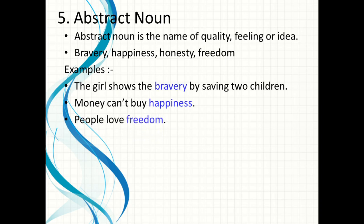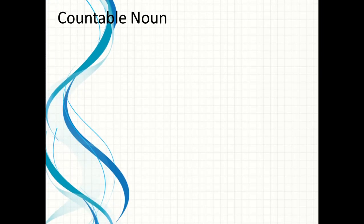'People love freedom' — freedom is also an abstract noun. One important thing about abstract noun: it is that which we cannot see or touch. Hum physically us ko dekh nahi sakte aur na hum us ko touch kar sakte hain, but we can only feel it. So all feelings, emotions, qualities, and ideas are known as abstract nouns.